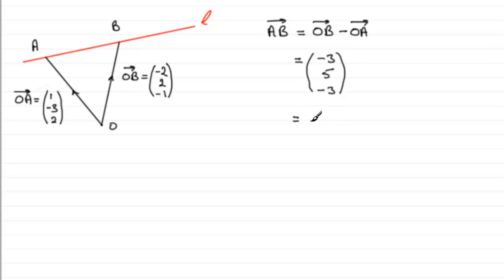Or you could write it, it's up to you, in i's, j's and k's. In which case it would be minus 3i plus 5j minus 3k. OK?